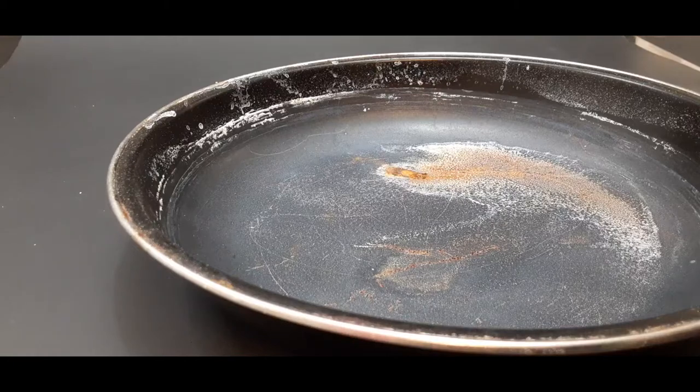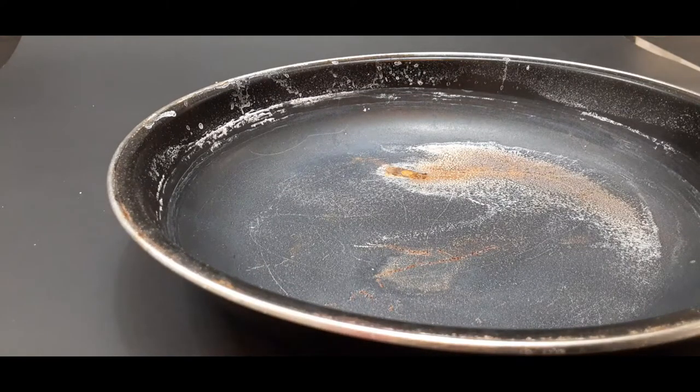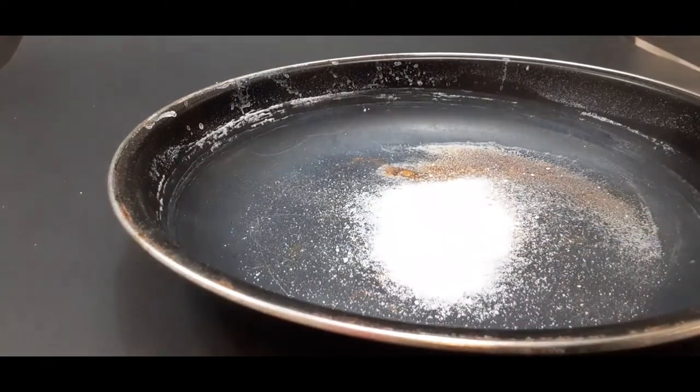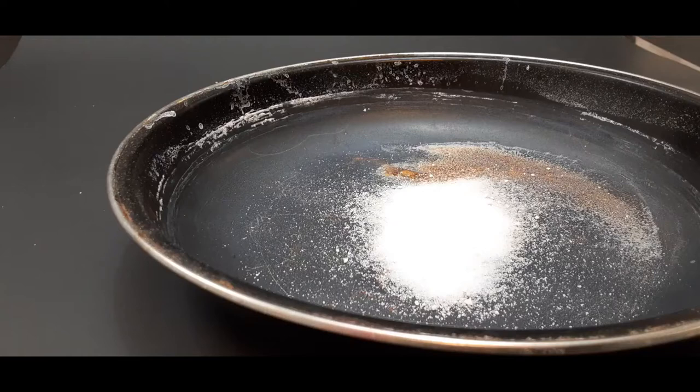First, I get a pan. After this, I need to add some chemicals for this reaction to happen. In this case, I need to add sulfuric acid and some potassium nitrate, which is the white powder that I'm putting in the pan.